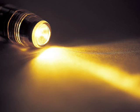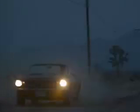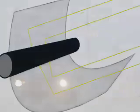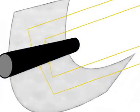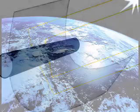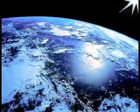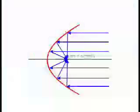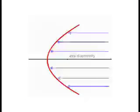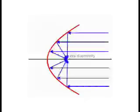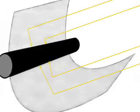The same principle is at work in the headlights of a car. The principle is also used with solar heat reflectors, but in reverse. The sun's rays are, for all practical purposes, parallel when they reach the earth. These rays reflect off a parabolically shaped reflector and are concentrated at the focus point. If an element to be heated is placed at the focus, the concentrated rays from the sun supply the heat.